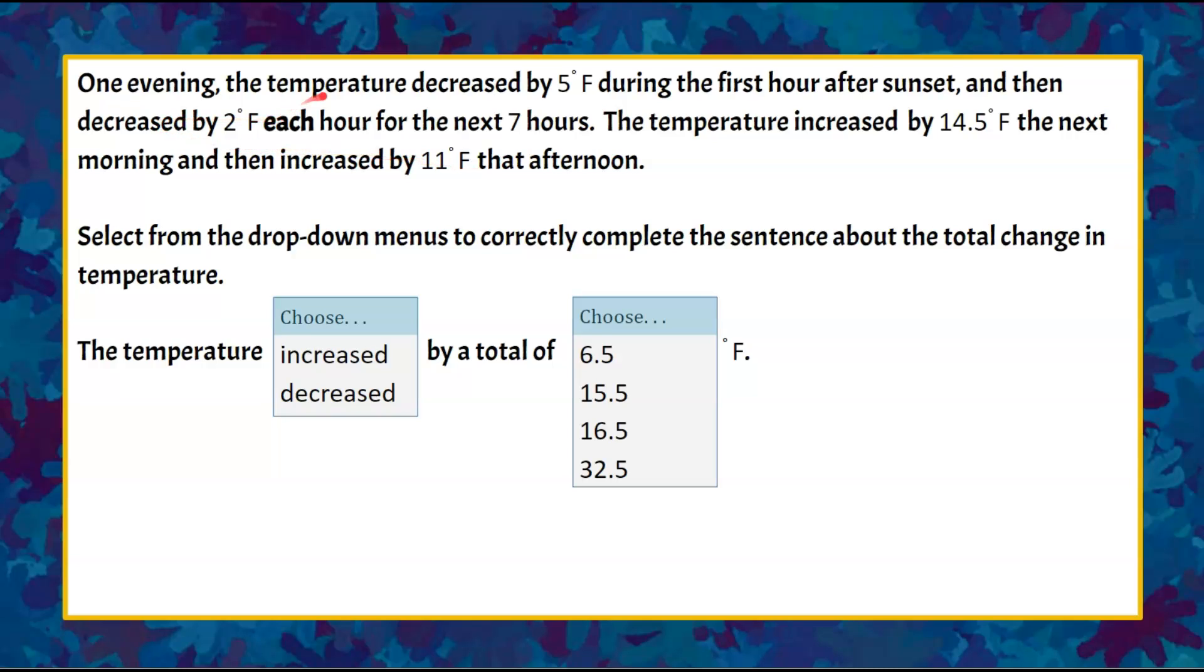One evening the temperature decreased by 5 degrees Fahrenheit during the first hour after sunset and then decreased by 2 degrees Fahrenheit each hour for the next seven hours. The temperature increased by 14.5 degrees Fahrenheit the next morning and then decreased by 11 degrees Fahrenheit that afternoon.